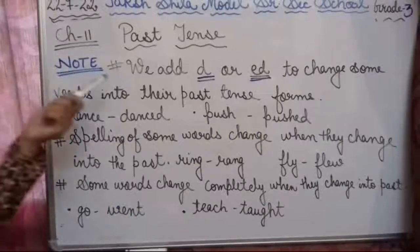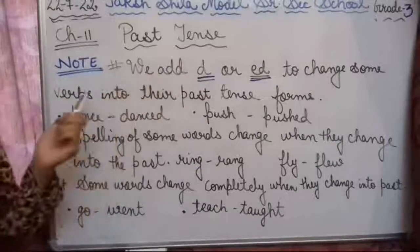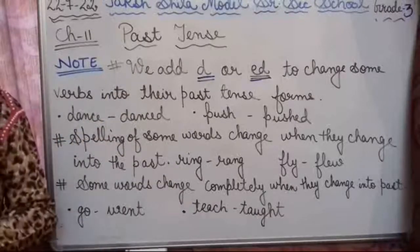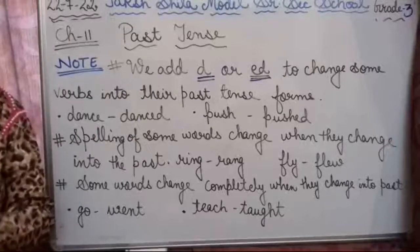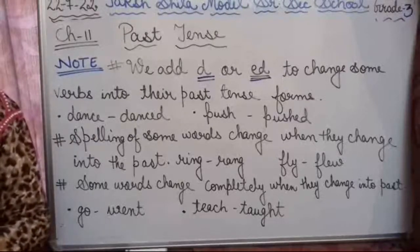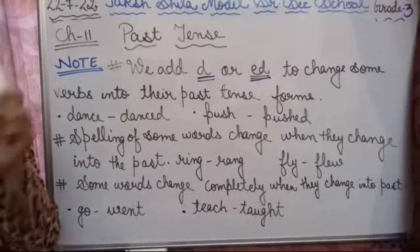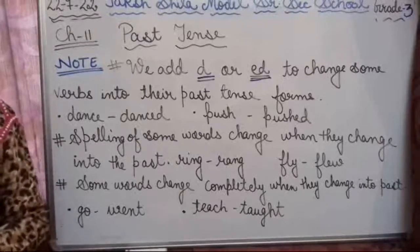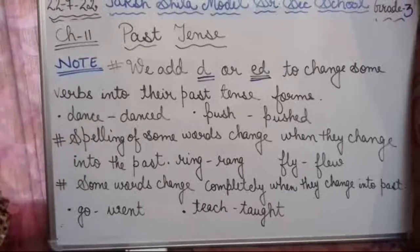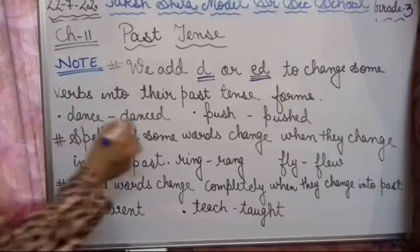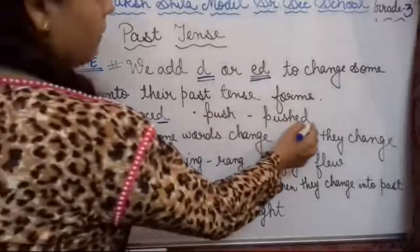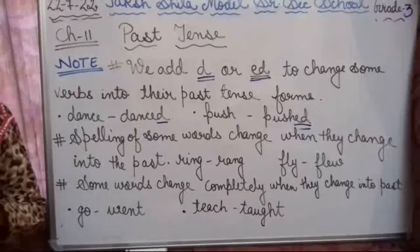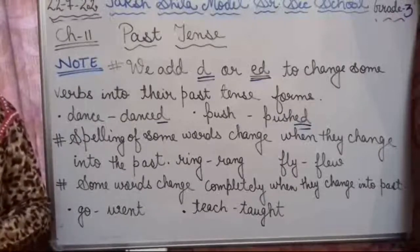Here is an important note: we add D or ED to change some verbs into their past tense forms. For example: dance → danced (added D), push → pushed (added ED), call → called, experience → experienced, play → played.